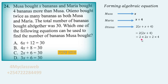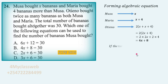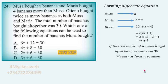Therefore: 2 multiplied by 2x gives us 4x, and 2 multiplied by 4 gives us 8. So the expression representing the number of bananas Oteno bought is 4x plus 8. At this point we have an expression for what Musa bought, what Maria bought, and what Oteno bought. Since the total number of bananas bought by all three people was 30, we can now form an equation to calculate the value of x.